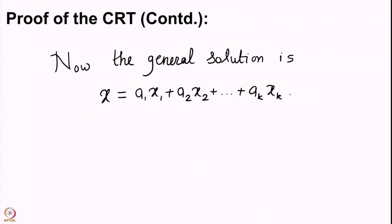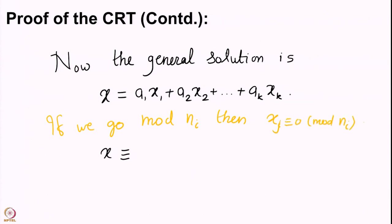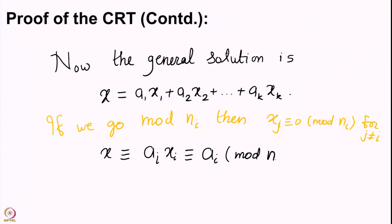If we look at this general solution modulo any particular ni, then mod ni each xj where j is not equal to i gives you 0. The only thing which survives is ai·xi, which is congruent to ai because xi ≡ 1 mod ni. This is our solution to the general system of simultaneous linear congruences.